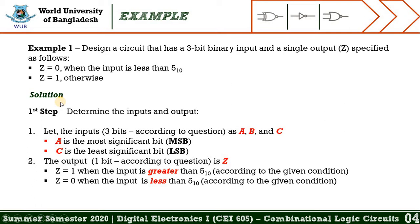From the question, we may notice there are two things: one is input and another one is output. Input should be 3-bit binary and output should be single. The condition states that output should be 0 only when the value of input is less than decimal number 5, and the output will be 1 in the rest of the cases. Let's start with the solution.